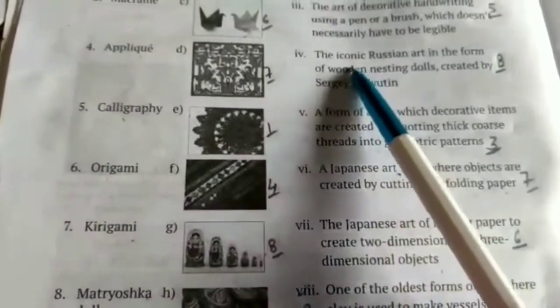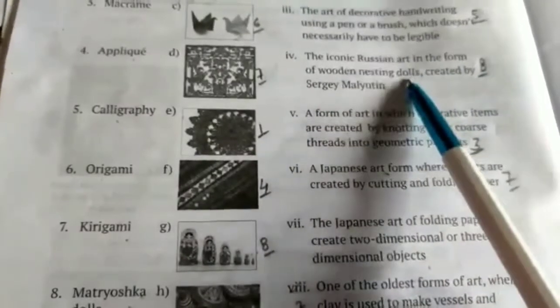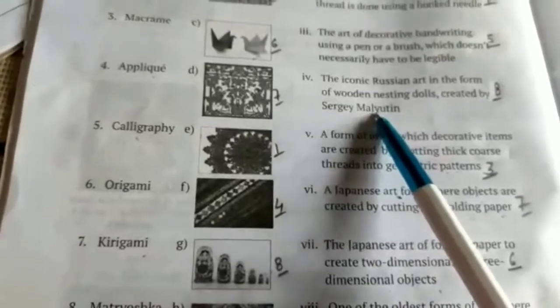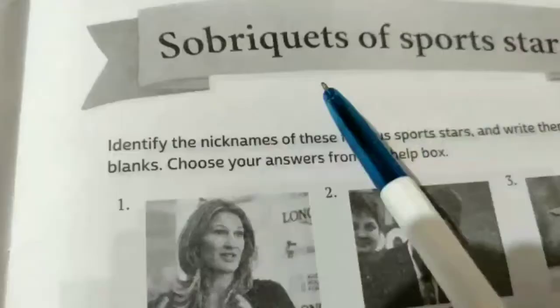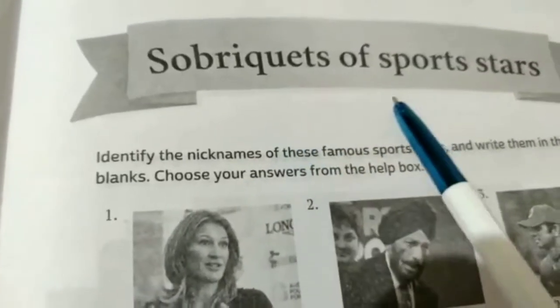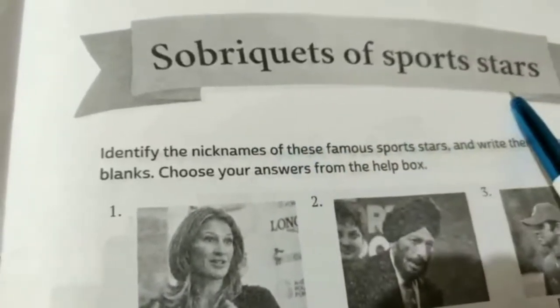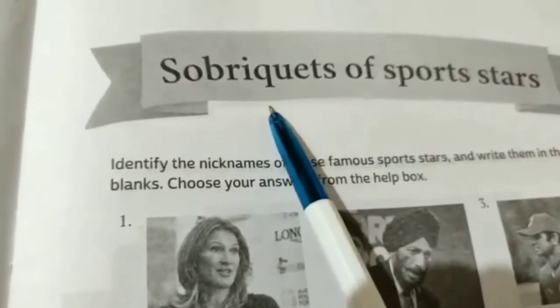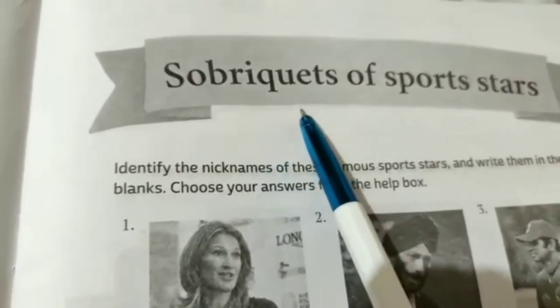The last one is matryoshka dolls. The correct match is G and the answer is four: the iconic Russian art in the form of wooden nesting dolls, created by Sergey Malyutin. The next topic is sobriquets of sports stars, where the word sobriquets means nicknames.